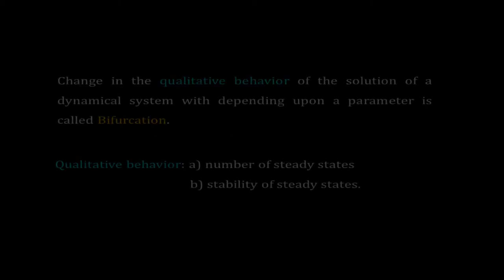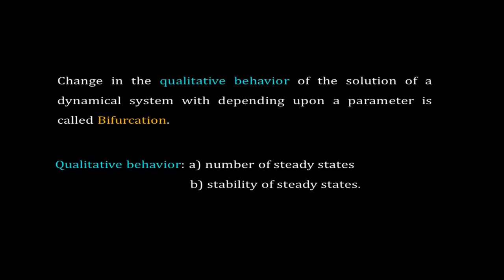In the last video we learned the concept of bifurcation. Qualitative changes in the dynamics of a system depending upon a parameter is called bifurcation. By qualitative changes we mean change in the number of possible steady states and change in the stability of the steady states. Change in either or both will change the phase portrait. In this short video I will introduce you to some of the common types of bifurcation, avoiding exhaustive calculation.